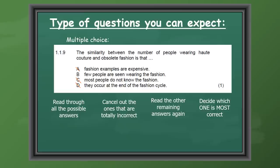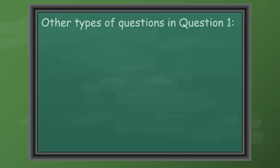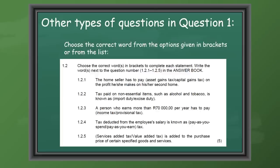In this case we can see that the similarity between the number of people wearing haute couture and obsolete fashion is that B — few people are seen wearing the fashion. Other types of questions in Section A will be to choose the correct word from the option given in brackets or from a list. It's very important that you just write your question number, for example 1.2.1, and then write the correct term next to that — capital gains tax, excise duty, etc.